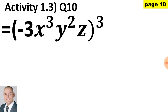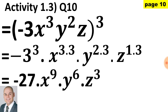Here in question 10, we have a coefficient of minus 3 raised to the exponent of 3. Because the exponent is 3, an odd number, our coefficient is going to remain negative. A power of x to the 3 raised to the exponent of 3, a power of y squared raised to the 3, and the power of z to the 1 raised to the exponent of 3. Where the power is raised to the exponent, we multiply the exponents. Therefore, we end up with minus 27, x to the 9, y to the 6, and z to the 3.